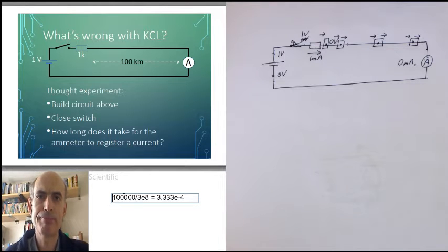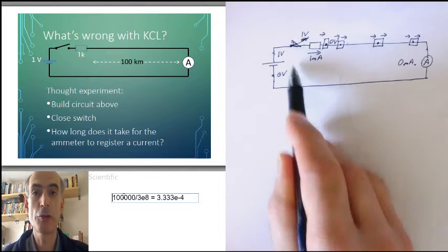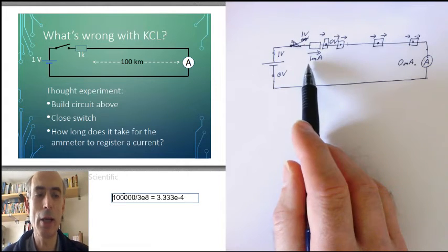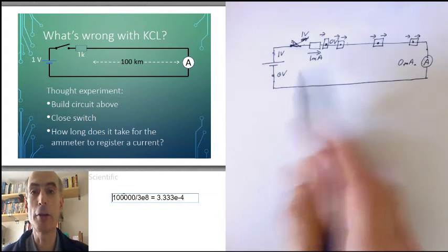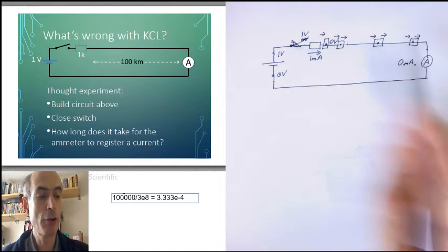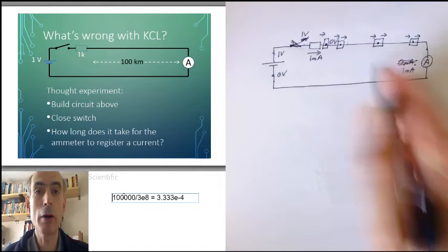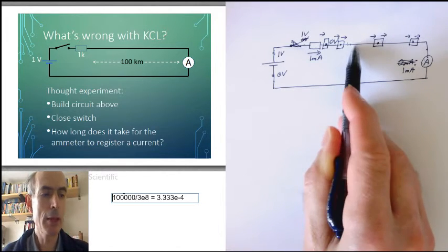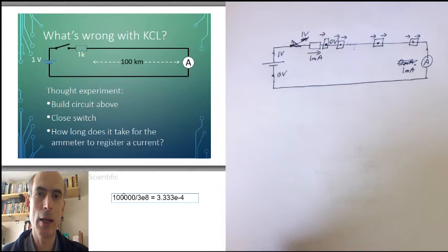Yes. Kirchhoff's current law only works for small circuits or for times that you're not worried about the propagation delay, we call it, about the length of time it takes for information to get from one end of the circuit to the other. After around 333 microseconds or thereabouts, after the information has got to the ammeter, then the ammeter would be reading 1 milliamp and everything would be fine. Kirchhoff's current law would be obeyed. It's just for that amount of time that the information is taking to get from one end of the circuit to the other that Kirchhoff's current law has a problem.